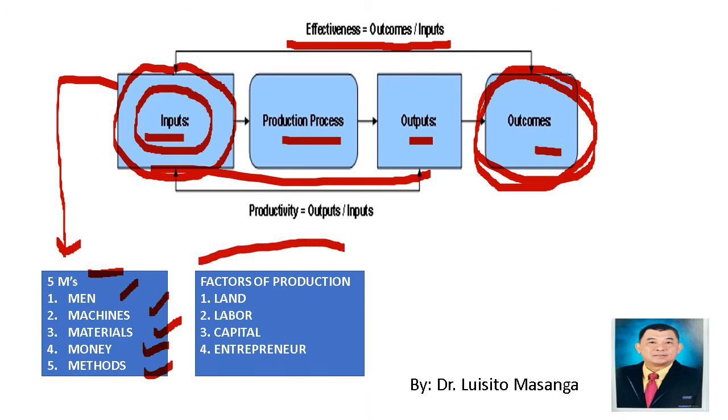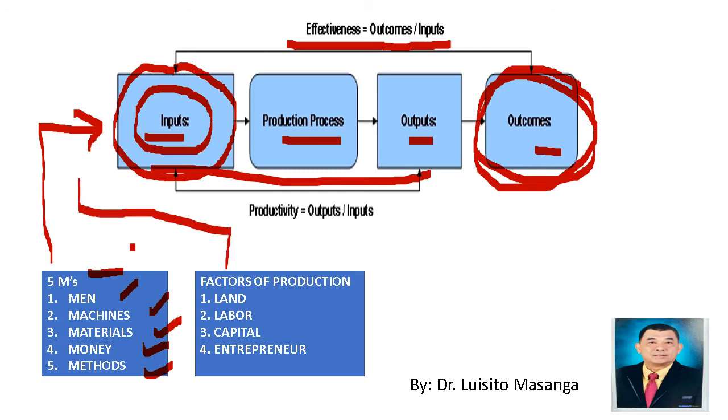We have the factors of production, or the means of production. This is land, labor, capital, and the entrepreneur. All of these are examples of inputs that has to be processed.